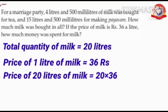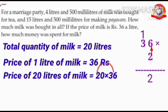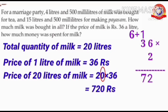First, multiply 36 and 2. That is 36 into 2. 2 into 6 is 12. Write 2, 1 carry over. 2 into 3 is 6, plus this one is 7. Then put this 0 to the right of the number 72. So, price of 20 liters of milk equals 720 rupees.